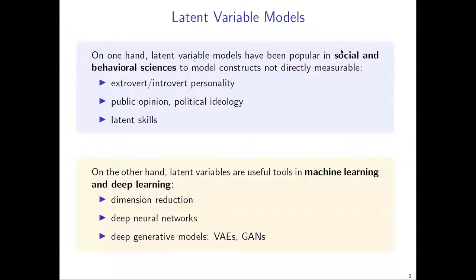Briefly speaking, latent variable models are a family of models with unobserved constructs. Traditionally they have been very popular in social and behavioral sciences — for example, to model unobserved substantive constructs such as personality in psychology or skills in education. But in recent years, latent variable models have also attracted a lot of interest in machine learning and deep learning, where they can serve as powerful dimension reduction tools, and latent structures are also building blocks for some deep learning models.